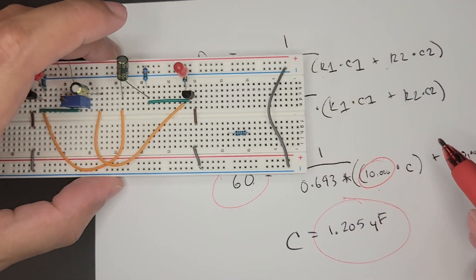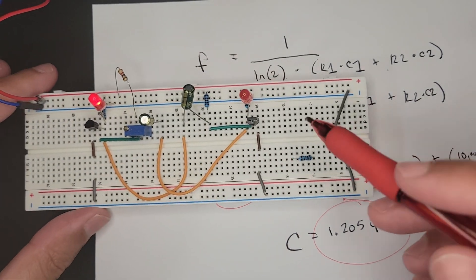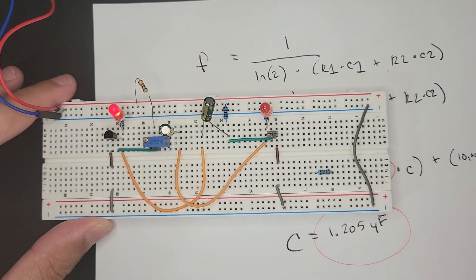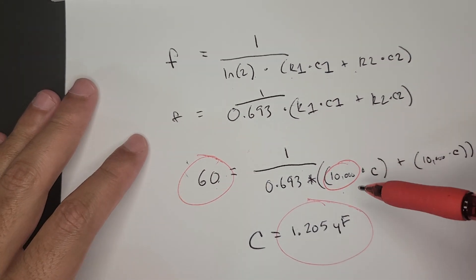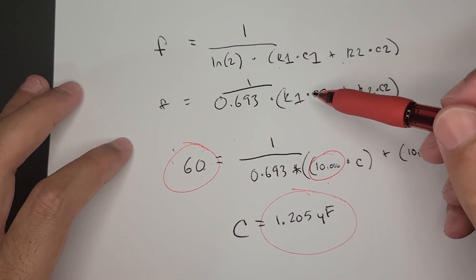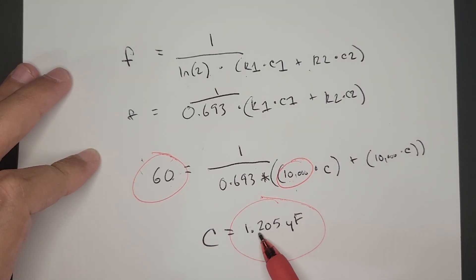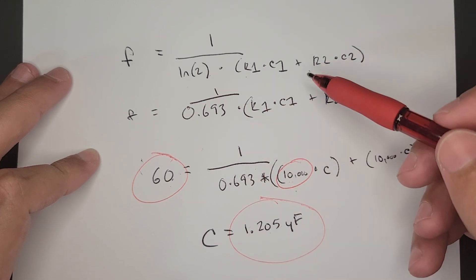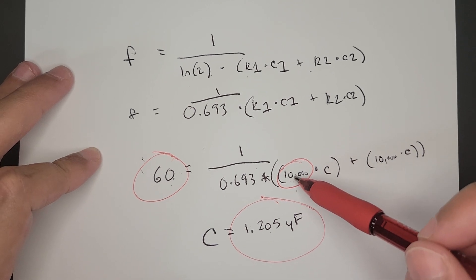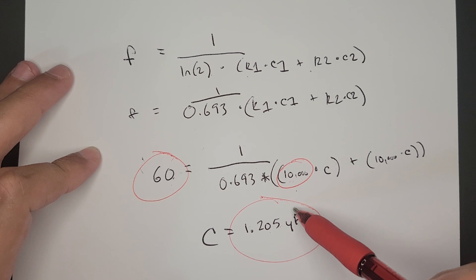If we had an exact 1.205 microfarad, which we don't, we would just put those in here with 10k resistors and it should work at 60 hertz if I'm following the equation properly. What I'm going to do is look at the capacitors that I have, then run the equation again and solve for the resistors this time. We'll find the closest match and do the equation again to get the resistance value needed. With resistors we can easily add a bunch in series, whereas with capacitors I don't really know how to do that.